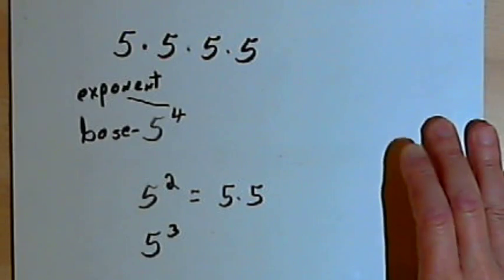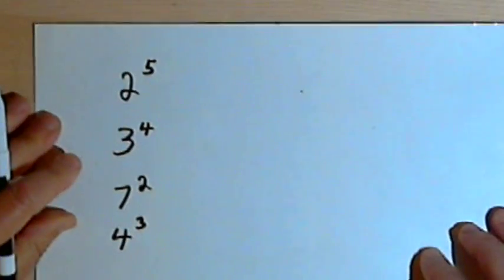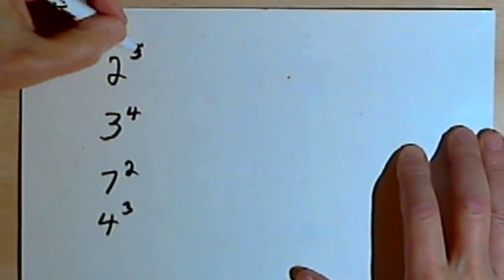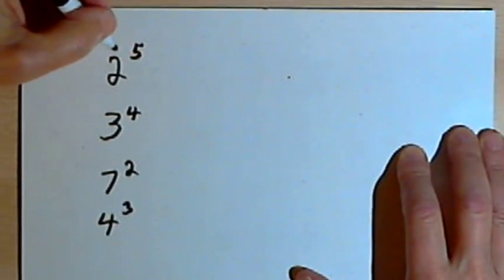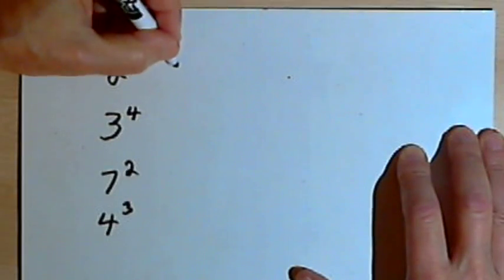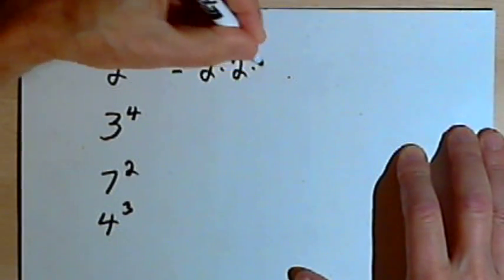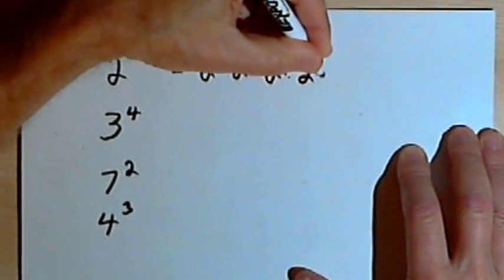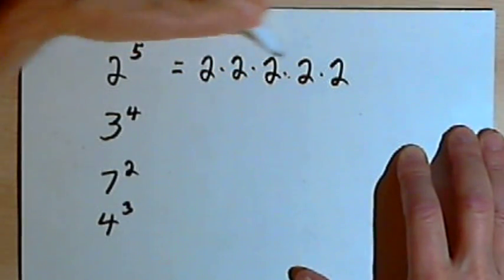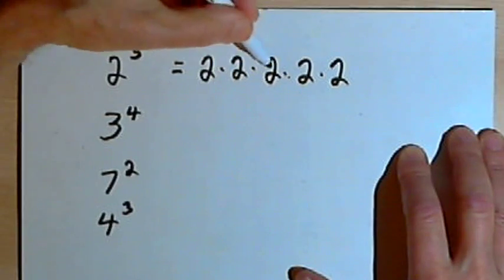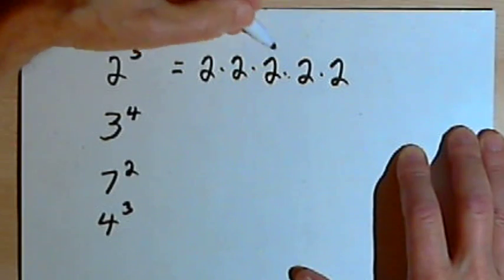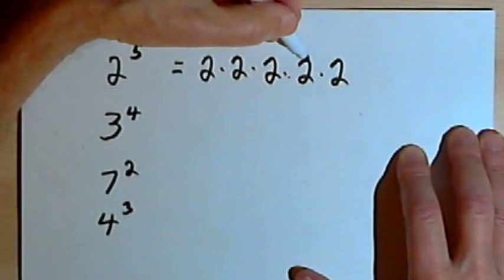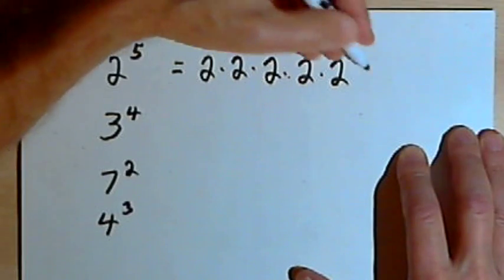Let's look at some examples. Here's 2 with an exponent of 5 — that's "2 to the 5th" or "2 raised to the 5th power." That means 2 times 2 times 2 times 2 times 2 — multiplying 2 repeatedly 5 times. 2 times 2 is 4, times 2 is 8, times 2 is 16, times 2 again is 32.